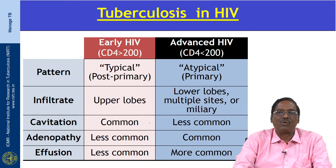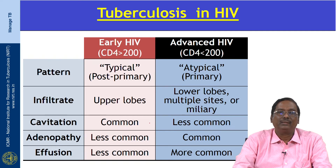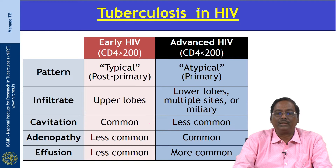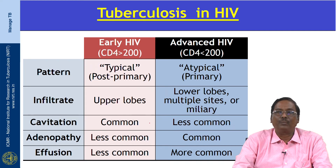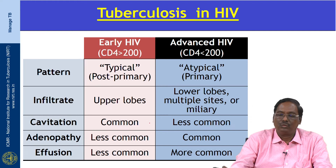In patients with advanced HIV where CD4 count is less than 200, the radiological features look like an atypical presentation of primary TB. Infiltrates are seen more in the lower lobe and multiple sites, and they may have a miliary pattern. Cavitation is less common, but adenopathy and effusion are more common in advanced HIV.